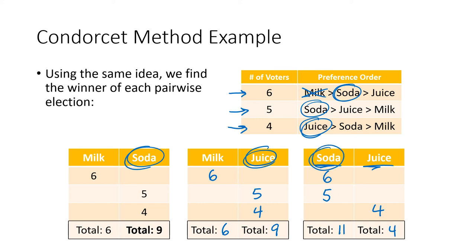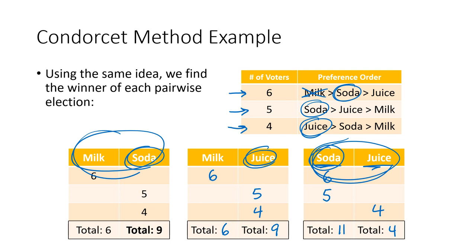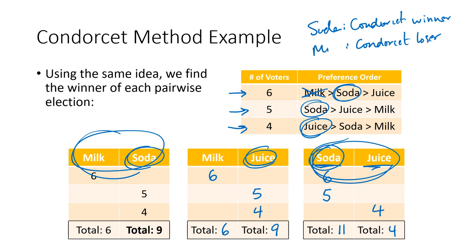So soda is the winner of all its matchups — soda beat milk in the first election and soda beat juice in the third election. Soda wasn't in the middle election, which was milk versus juice, so the Condorcet method is asking which candidate won all of the matchups that they were in. In this case, that's soda — so soda is the Condorcet winner. What about the Condorcet loser? Milk lost versus soda and milk lost versus juice — those were all the matchups that had milk in them. So milk is the Condorcet loser.